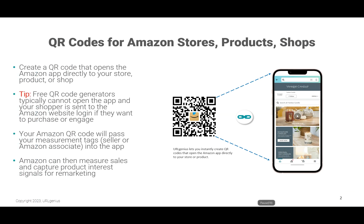In just a moment, I'm going to demonstrate how to create a QR code for Amazon that opens to a specific screen. But first, why do you want to use a platform like URLGenius? Free QR code generators typically cannot open apps, so instead your shopper is sent to the Amazon website login if they want to purchase the product, engage with the product details, or even add to cart.